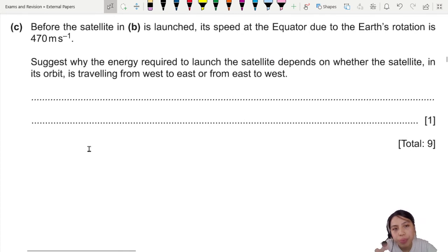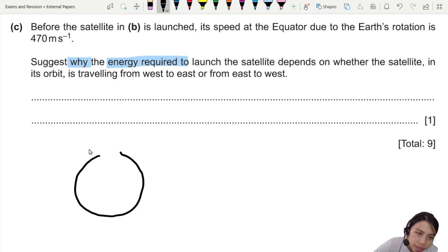Let's look at this final one. Before the satellite is launched, its speed at the equator due to the Earth's rotation is 470. Oh, we forgot that the Earth also rotates. Suggests why. So we're asking why the energy required depends whether the satellite is orbiting from west to east or east to west. Energy required to launch, why does the energy required differ? Let me draw for you.